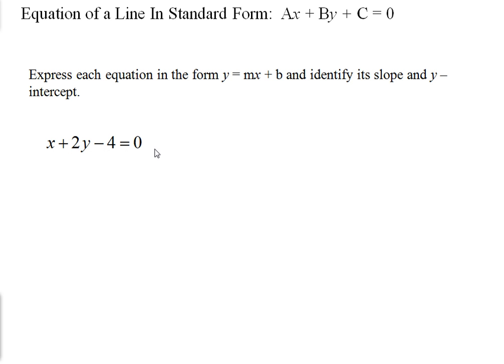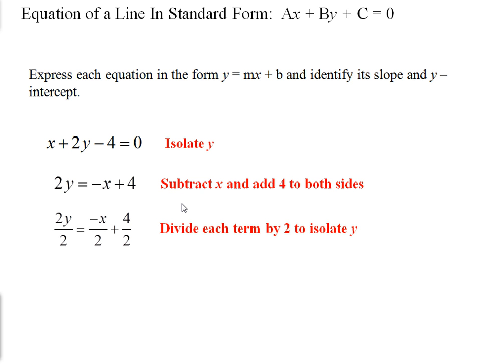x plus 2y minus 4 is equal to 0. So we're going to rearrange or isolate y so that it looks like slope y-intercept form. So in this case, I did a couple of steps in one. We needed to subtract the x from the left side and add 4 to the left side. So I did the exact same thing on the right side, subtracted x and added 4. And now in order to isolate the y, we have to divide by 2. So we divide each term in the equation by 2 and we simplify. 2 over 2 becomes 1y, negative 1 over 2 x plus 2. So now that we're in slope y-intercept form, we can easily tell that the slope is negative 1 half and the y-intercept is 2.